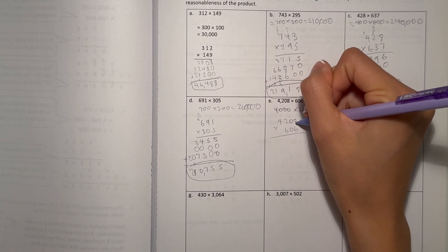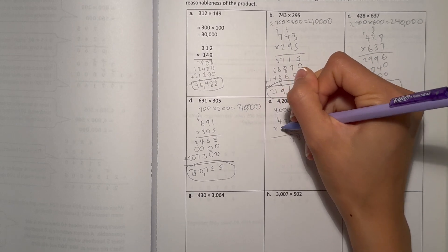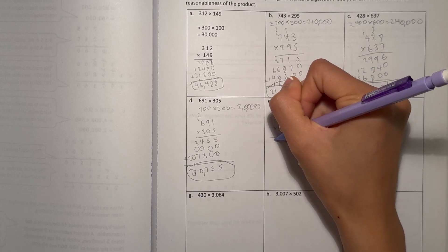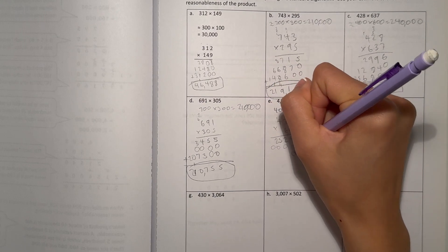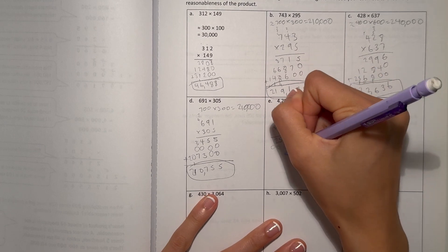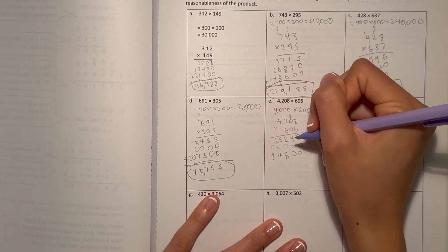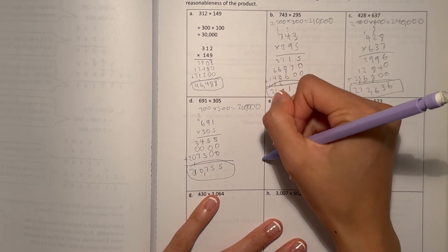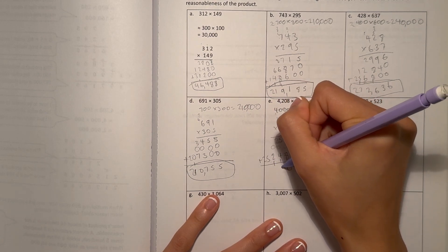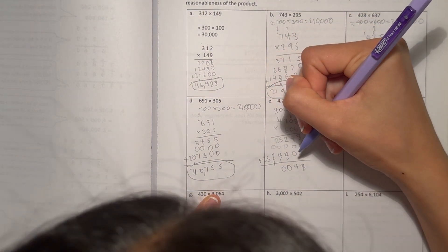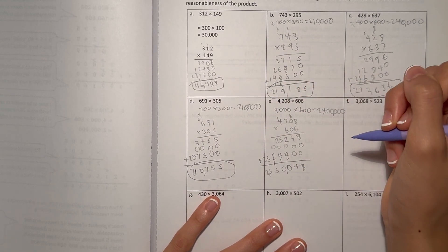Let's look at the 6. 8 times 6 is 48. 0 times 6 is 0, plus 4 is 4. 2 times 6 is 12. And 4 times 6 is 24, plus 1 is 25. Now let's add. 1,550,048.